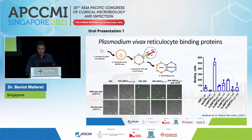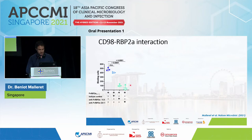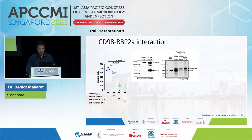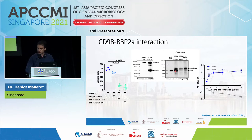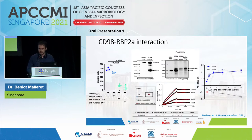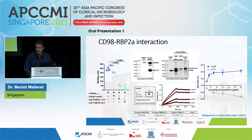The key result we obtained was with RBP2A. We can see very strong binding when we use RBP2A with reticulocytes, and using antibodies against RBP2A, we can block the rosetting. By immunoprecipitation, we can see a clear interaction between CD98 and RBP2A. By ELISA, coating the plate with RBP2A, there is also a strong binding between RBP2A and CD98, while CD71 shows no binding. To confirm this interaction clearly, we used biolayer interferometry, and with different concentrations of RBP2A, we have a very nice binding with an excellent KD between RBP2A and CD98.